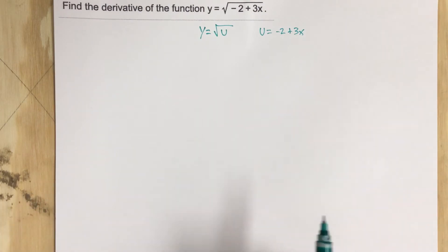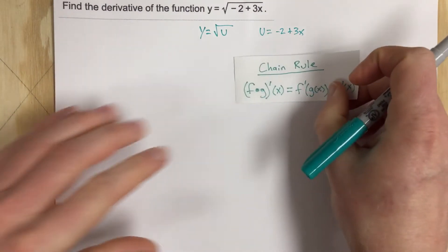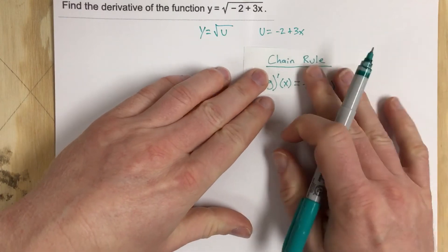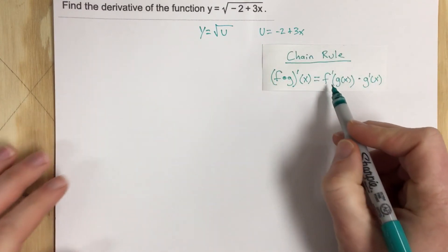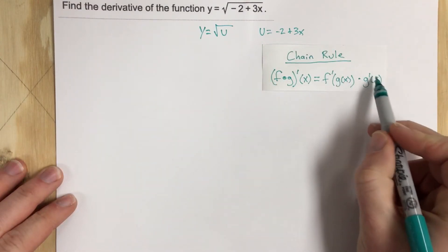Well let's go ahead and use the chain rule. Now the chain rule states that we want to take the derivative of the outside times the derivative of the inside.